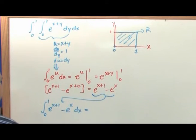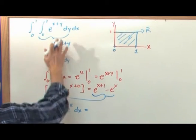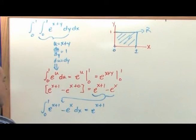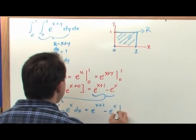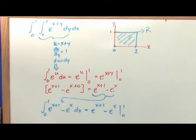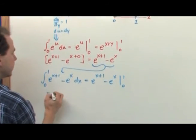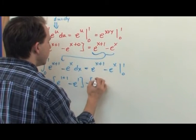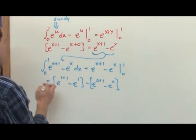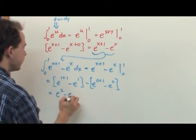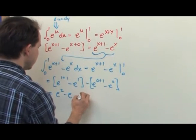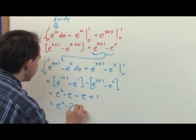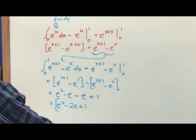Now it becomes a regular integral. I have the integral from 0 to 1 of e^(x+1) minus e^x dx. I know that the integral of e^(x+1) is simply e^(x+1), and the integral of e^x is e^x, evaluated from 0 to 1. Plugging in the top: e^(1+1) minus e^1, minus e^(0+1) minus e^0 — which gives e² minus e, minus e plus 1. So the answer is e² minus 2e plus 1.